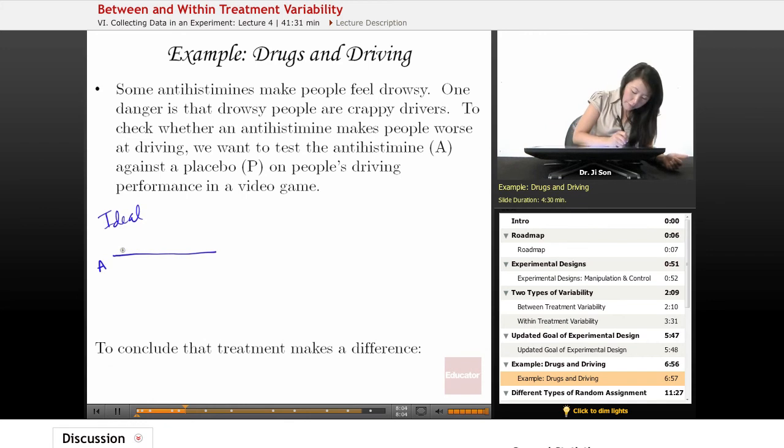maybe we'll see them all having low scores. Maybe one person gets a high score, but the placebo group will tend to mostly get high scores. So if we had something like this,